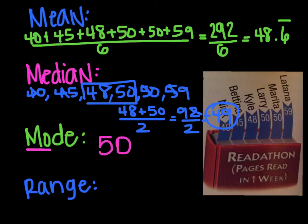And the last problem we have is the range. The range is the biggest number and the smallest number and the difference between the two. So, biggest number is 59. Smallest is 40. So, when I take 59 and subtract 40, you get an answer of 19. So, your range is 19.